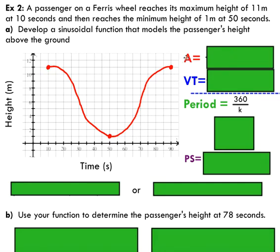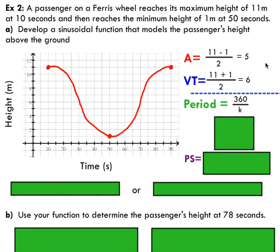Let's look at the amplitude first. Remember, we need the amplitude, vertical translation, the period, and the phase shift. The amplitude, we can calculate that by finding the max minus the min over two. Vertical translation is the average of the max and min, so we get five and six, respectively.